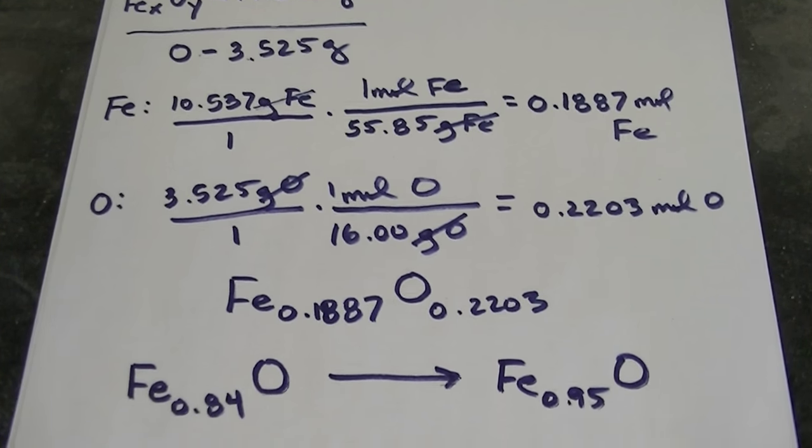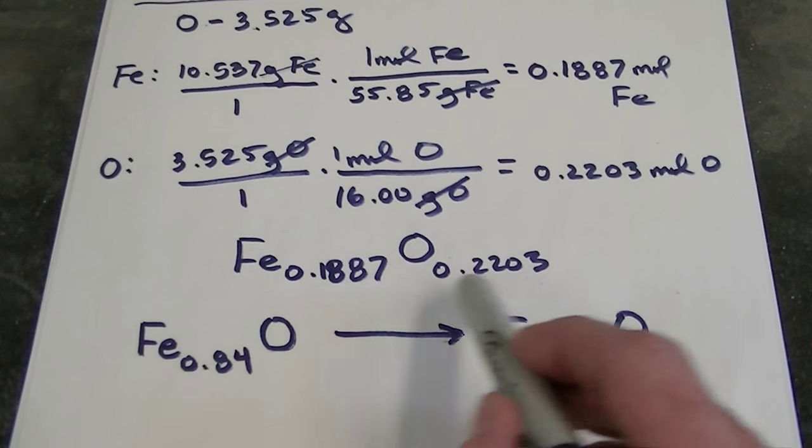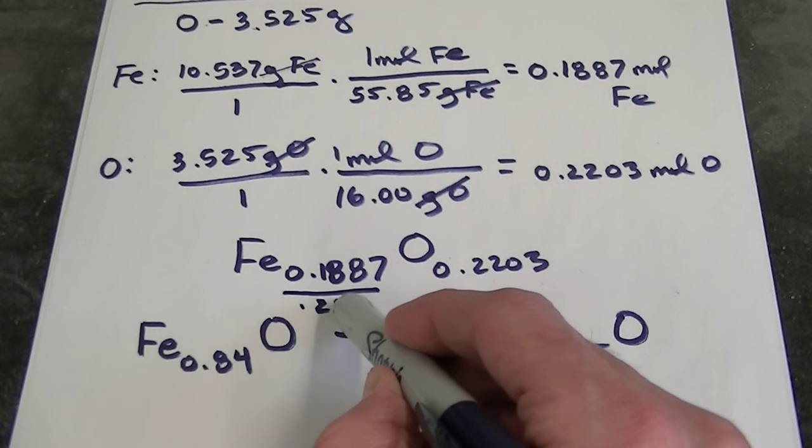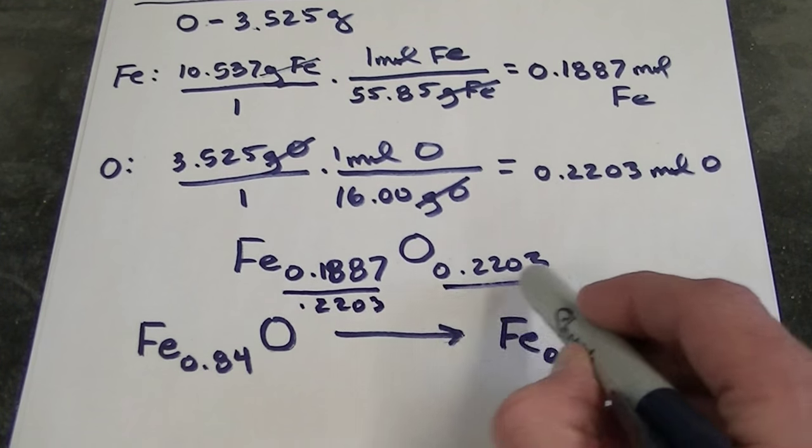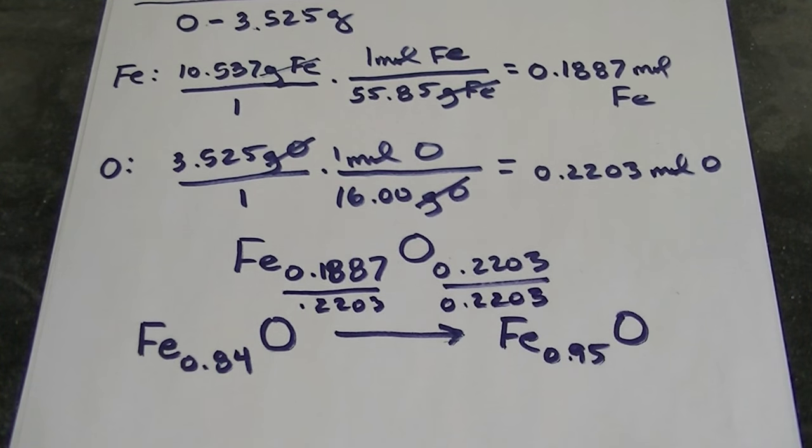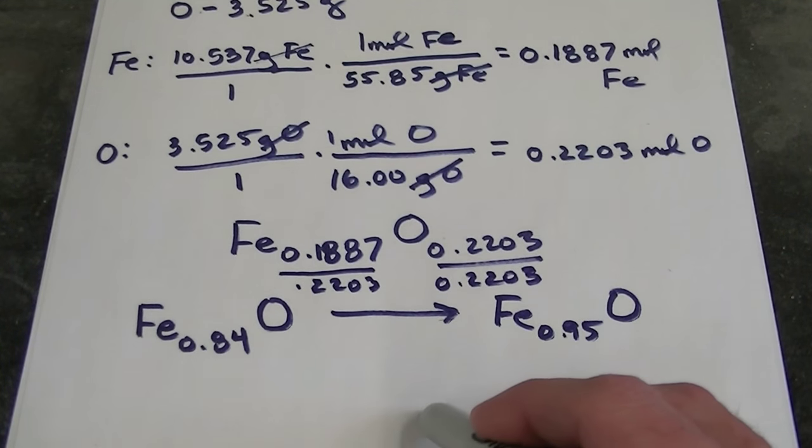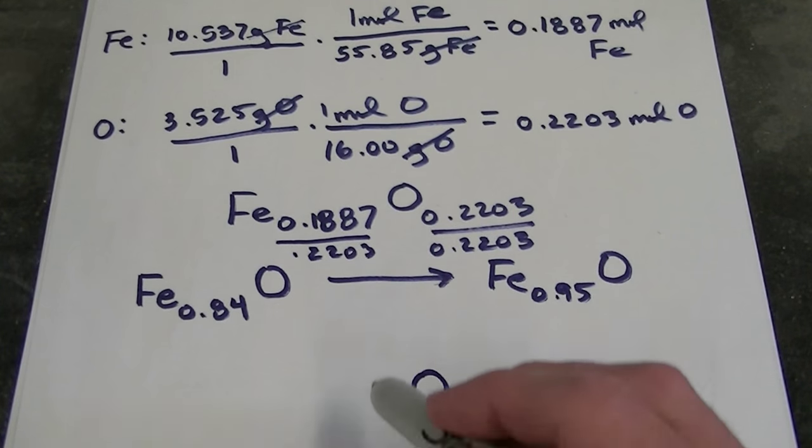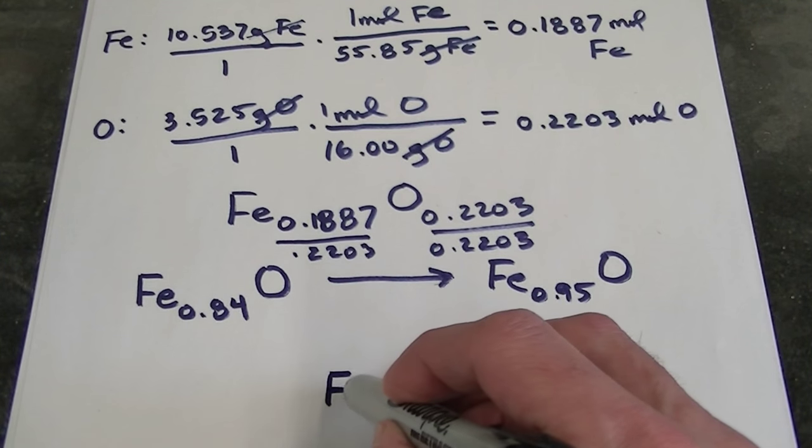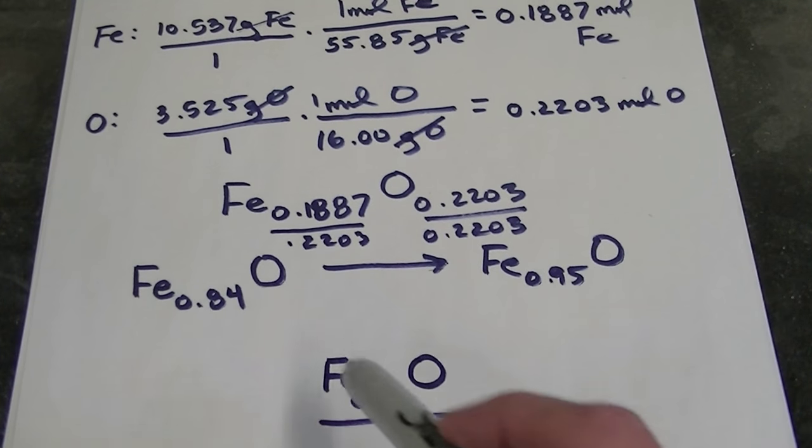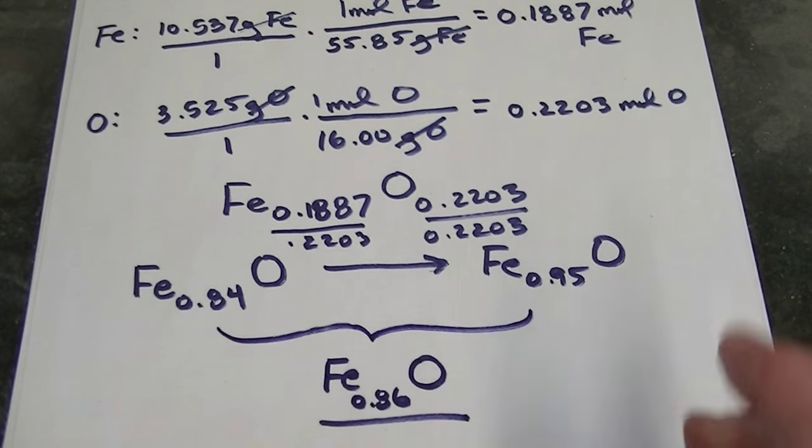Well, to do so, I'm just going to divide both of these numbers by 0.2203. Of course, 0.2203 divided by 0.2203 is 1. So my ratio of oxygen, of course, is going to be 1. And then compared to that, 0.1887 divided by 0.2203, that comes out to 0.86, which falls nicely within the range of expected possibilities.